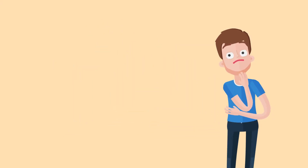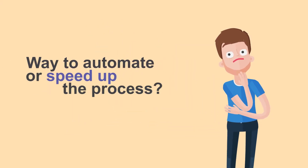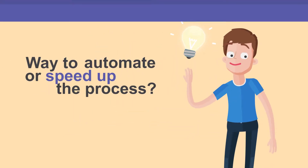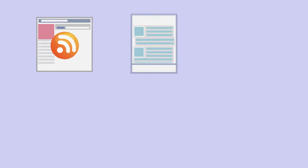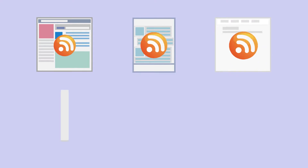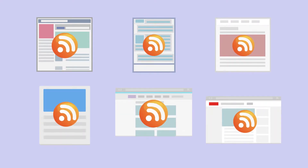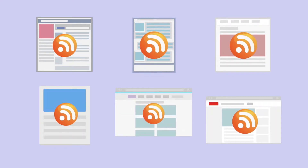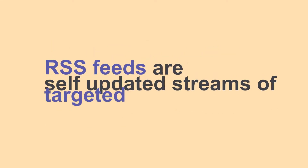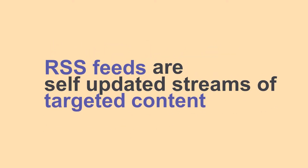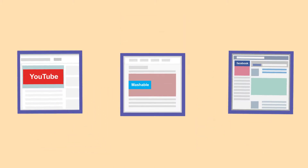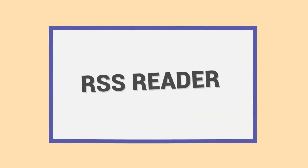What if there was a way to automate or speed up this process? A lot of content providers syndicate their content via RSS feeds, and RSS feeds are self-updated streams of targeted content. So tools like RSS readers allow you to consume content from various sources all in one place.